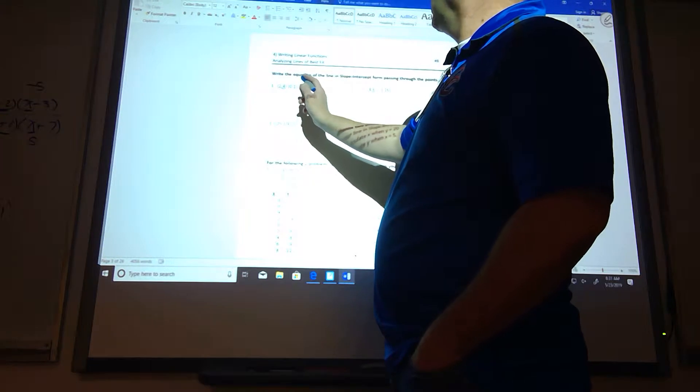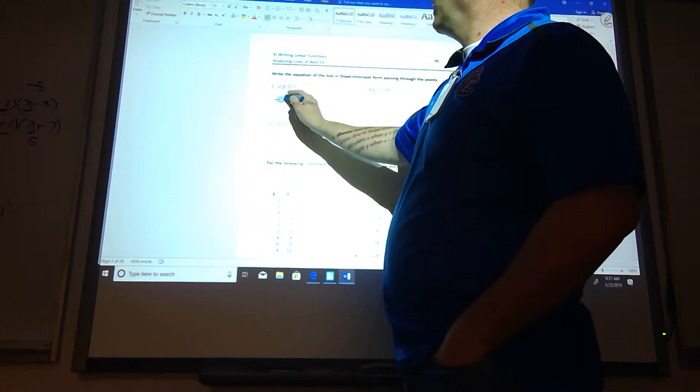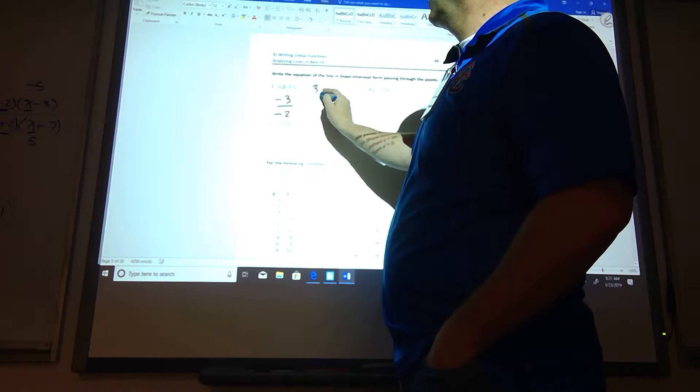Odd answers for Chapter 4. Let's see, find the equation in slope-intercept form. So, 1 minus 4 is negative 3, 0 minus 2 is negative 2, so I get negative 3 over negative 2.